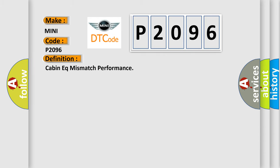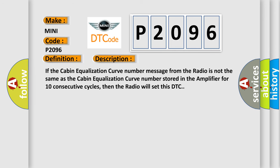Cabin EQ mismatch performance. And now this is a short description of this DTC code. If the cabin equalization curve number message from the radio is not the same as the cabin equalization curve number stored in the amplifier for 10 consecutive cycles, then the radio will set this DTC.